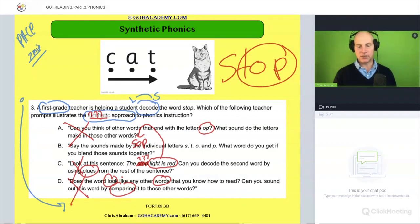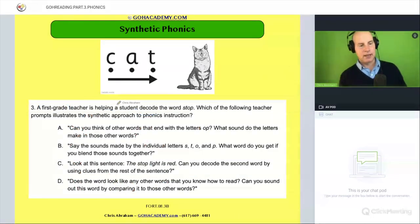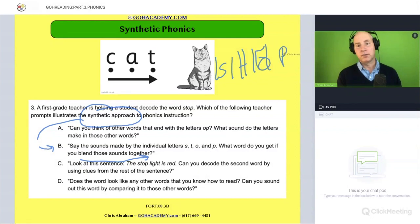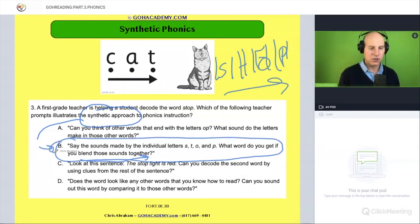The answer is B. Which of the following teacher prompts illustrates the synthetic approach to phonics instruction? It's B. Say the sounds that make the individual letters S, T, O, P. What word do you get if you blend those sounds together? So literally, say the sounds of the individual letters is segmenting the sounds S, T, O, P, right, and then blend it together. So here we have synthetic phonics. The answer is B.